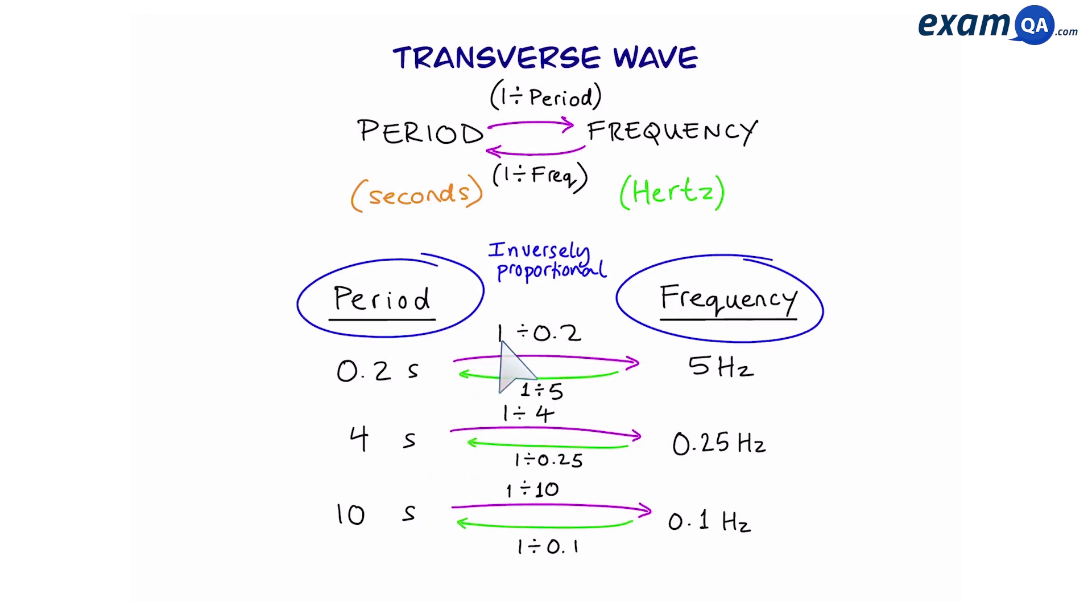Now period and frequency are inversely proportional. What that means is if one of them goes up, the other will go down. So in this example we saw that period was getting larger, and as period got larger, the frequency got smaller. And had it been the other way, had period become smaller, frequency would have become larger.